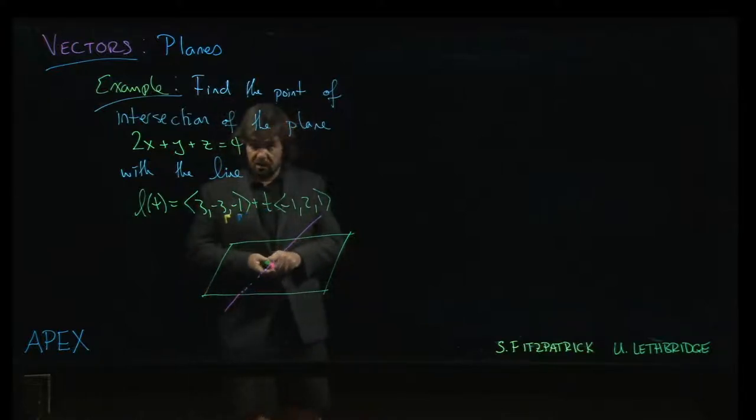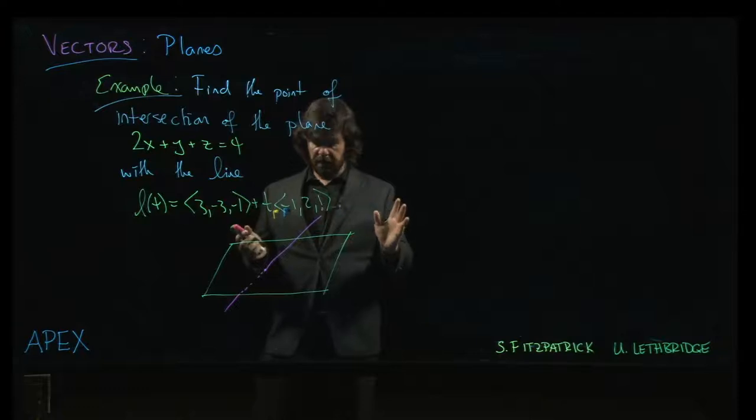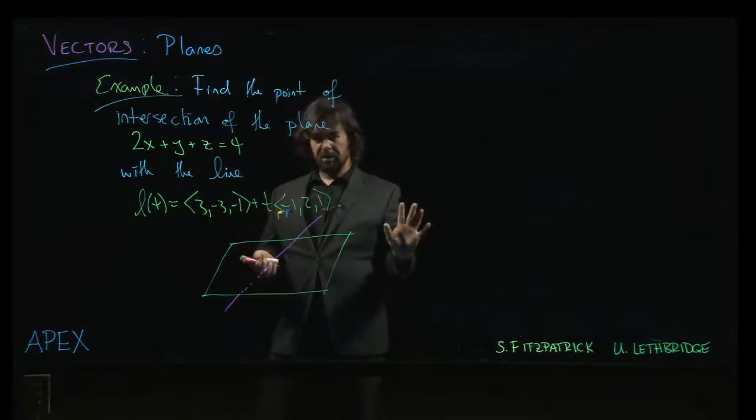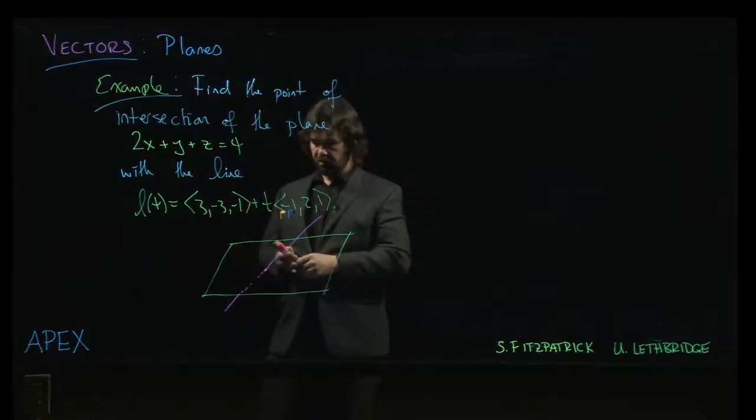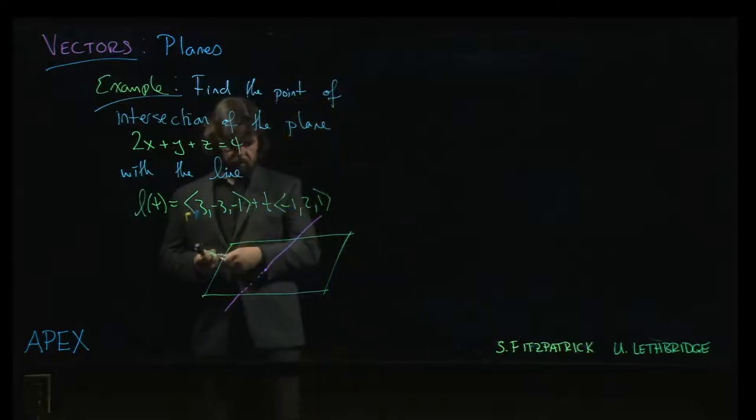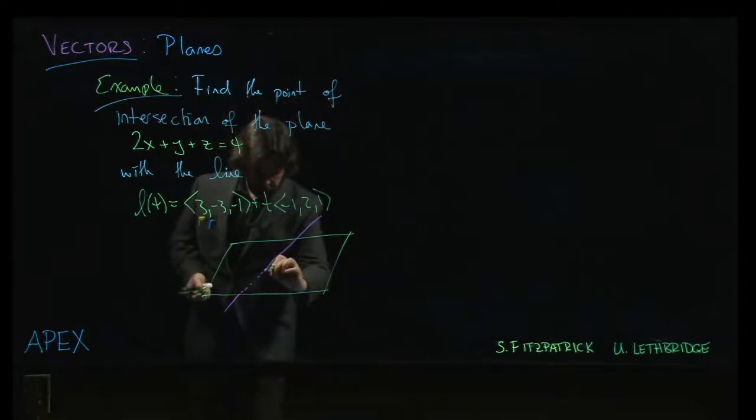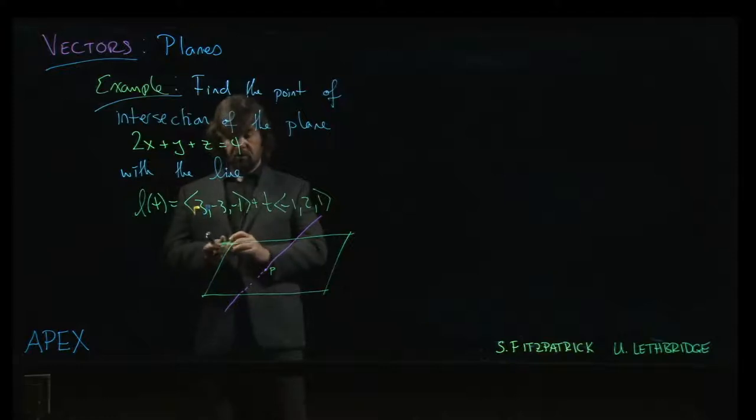So the line is not necessarily perpendicular to the plane. As long as it's not parallel we can look for a solution. So we're looking for some point P, which is common to both the line and the plane.